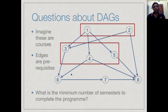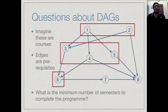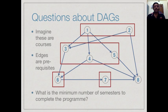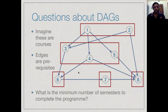The only course for which all prerequisites are satisfied next is 6, because 7 requires 6 which has not been done, and 8 requires 7 which has not been done. So in the third semester we are stuck doing only course 6. In the fourth semester we can do 7, and finally after 5 semesters we can complete these requirements. In general, we can ask: what is the minimum number of semesters for a given DAG?